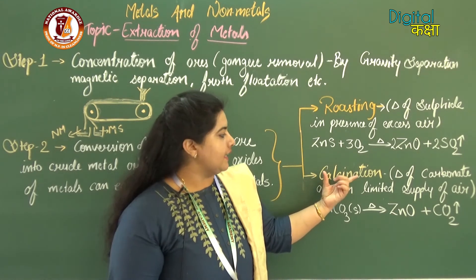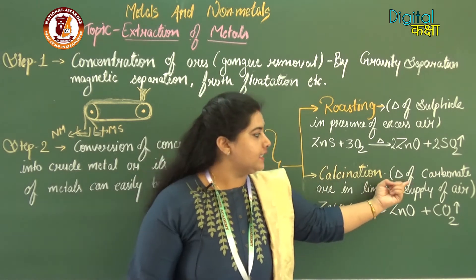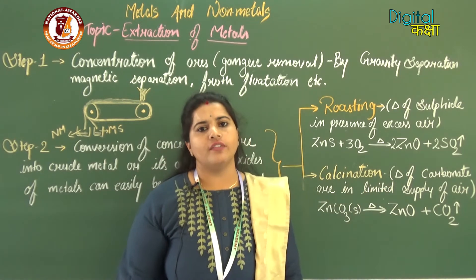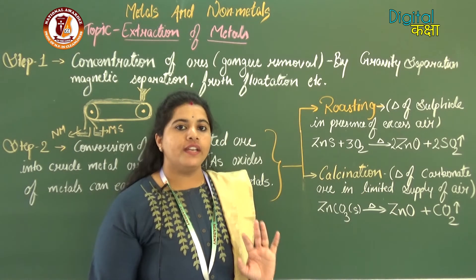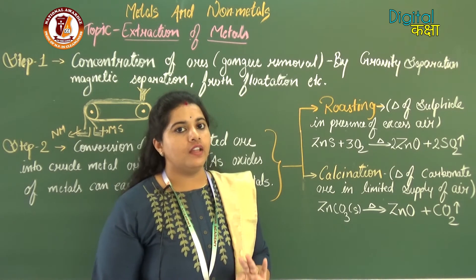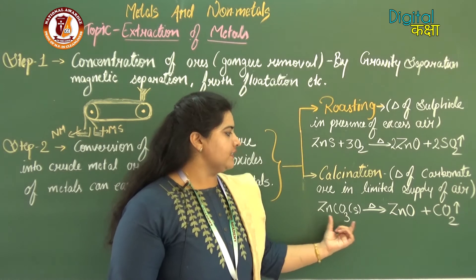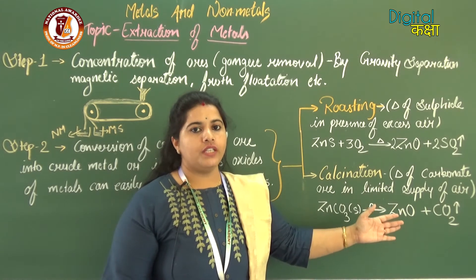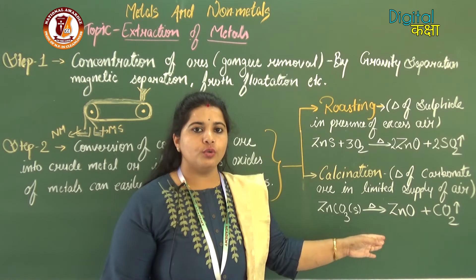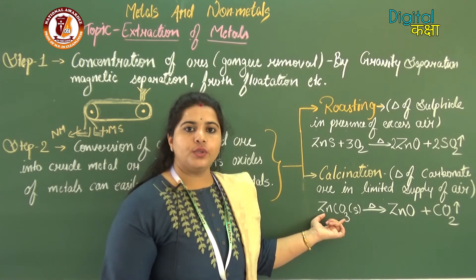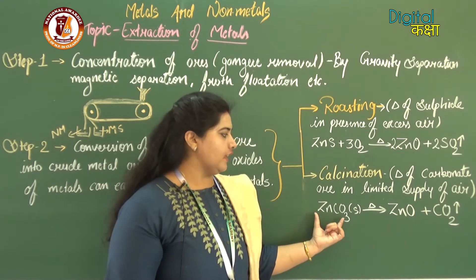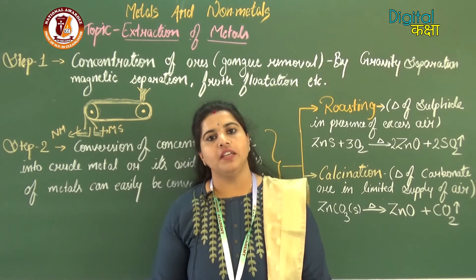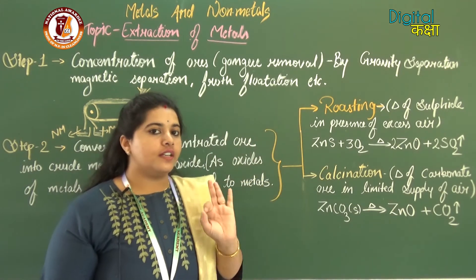If the ore is a carbonate, the process used is calcination. Calcination is the heating of carbonate ore in a limited or negligible supply of air — very little oxygen is required. When ZnCO3 (zinc carbonate) is heated, it converts to zinc oxide (ZnO) and carbon dioxide gas is released: ZnCO3 → ZnO + CO2.